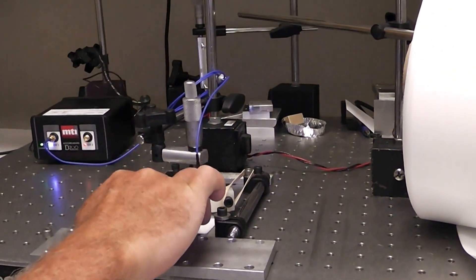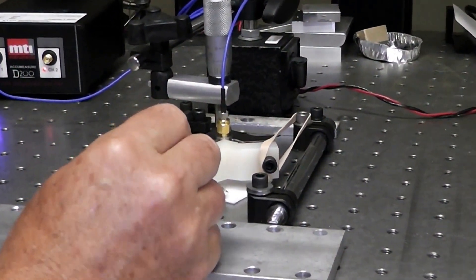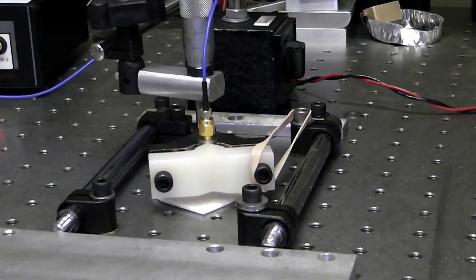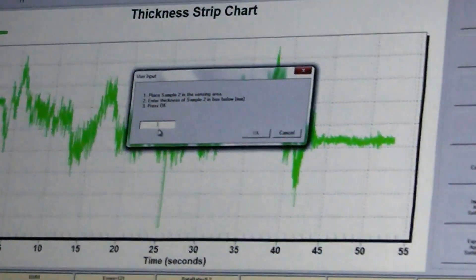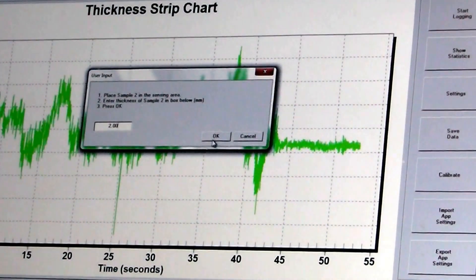And the next thing I'm going to do is put this sample of known thickness in here, slide it under the probe. I'm going to tell the system that the sample is 2 millimeters thick. Click OK.